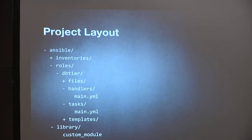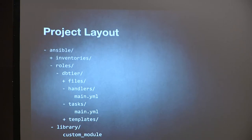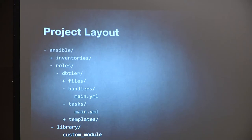This is what your project will look like after you've built a reasonably complete playbook system. Under a root directory you'll have inventories (which we've seen), and roles broken up by name — like DB tier. Under each role you'll have: files (files to just copy, no variable replacement), handlers (tasks that listen to events), tasks themselves, and templates (templatable files). You'll also have a library for custom modules, and at the root level your playbook.